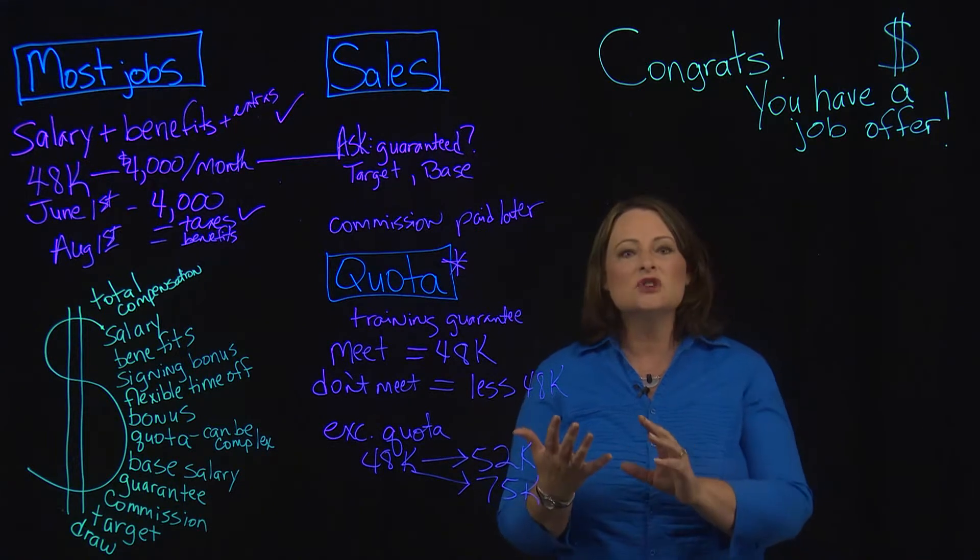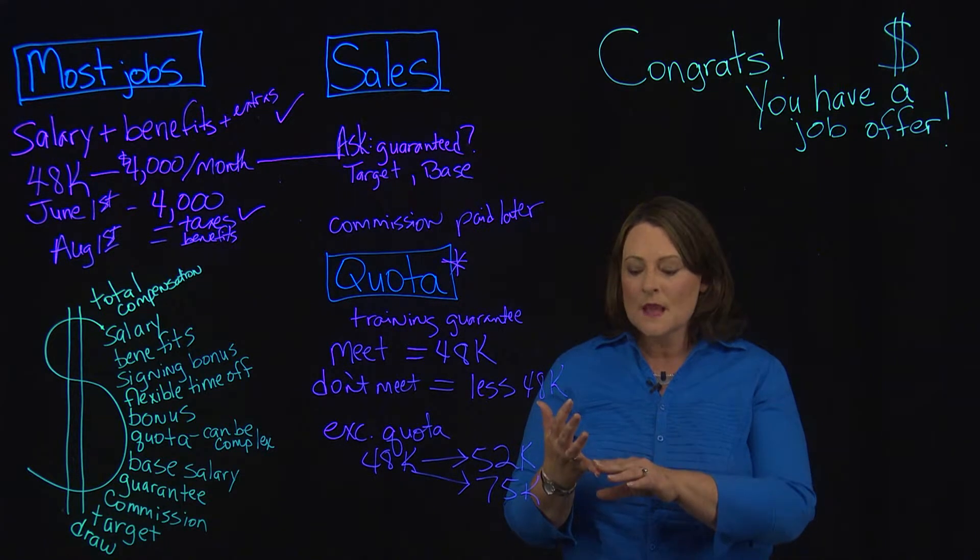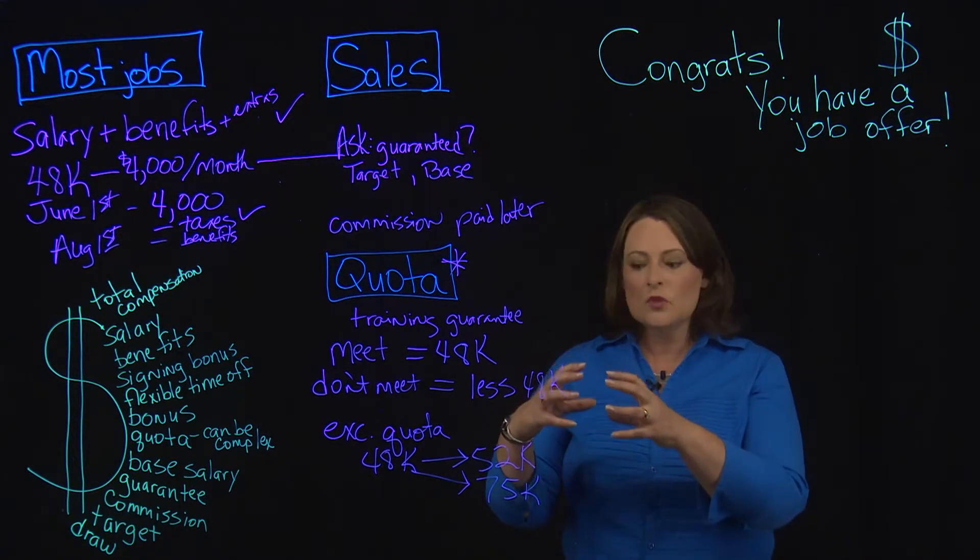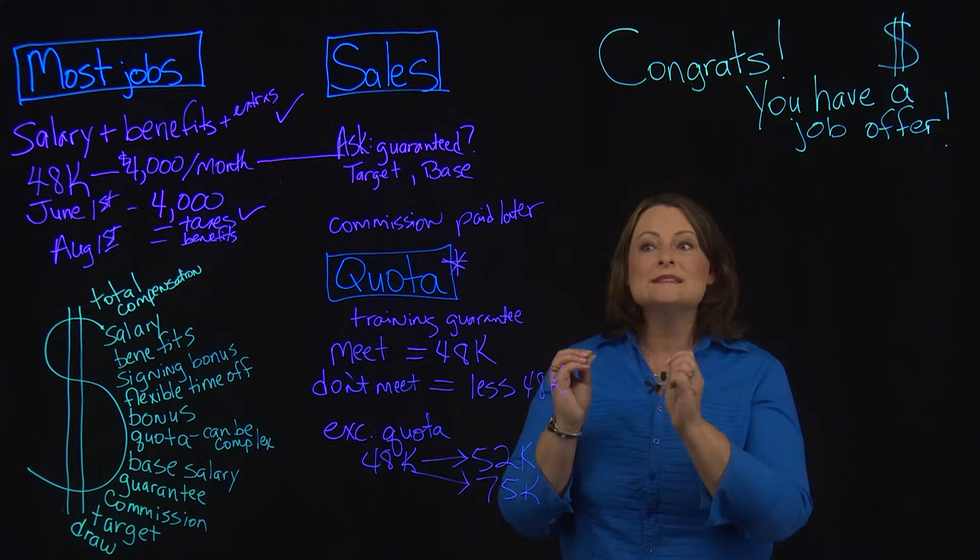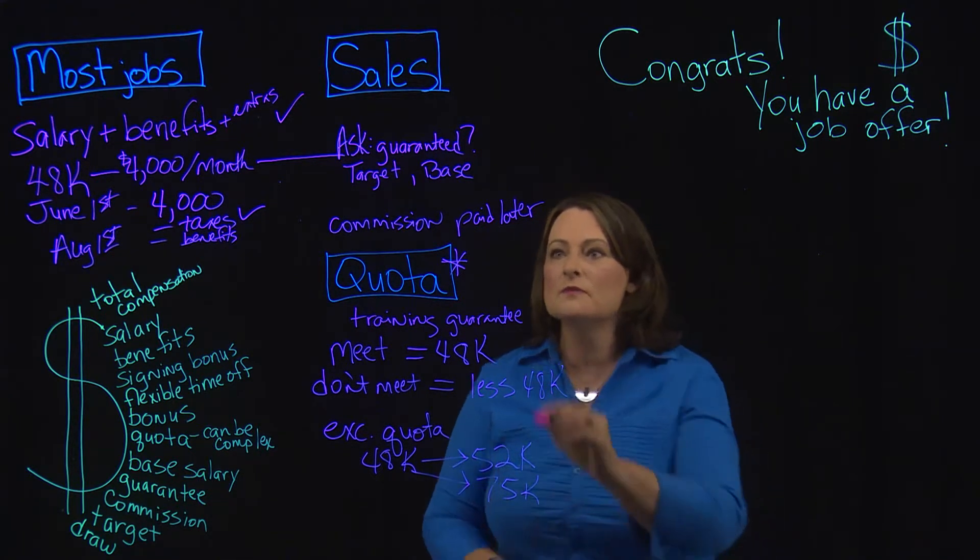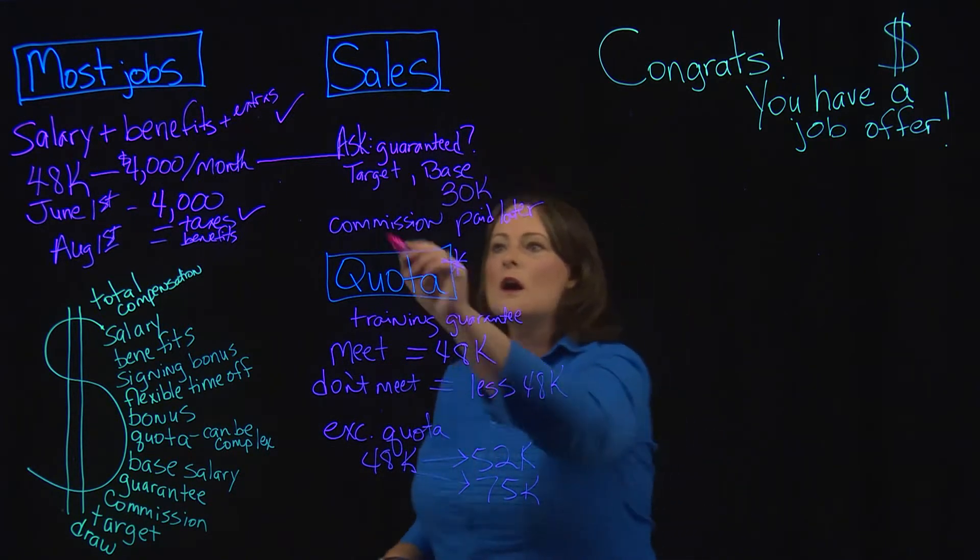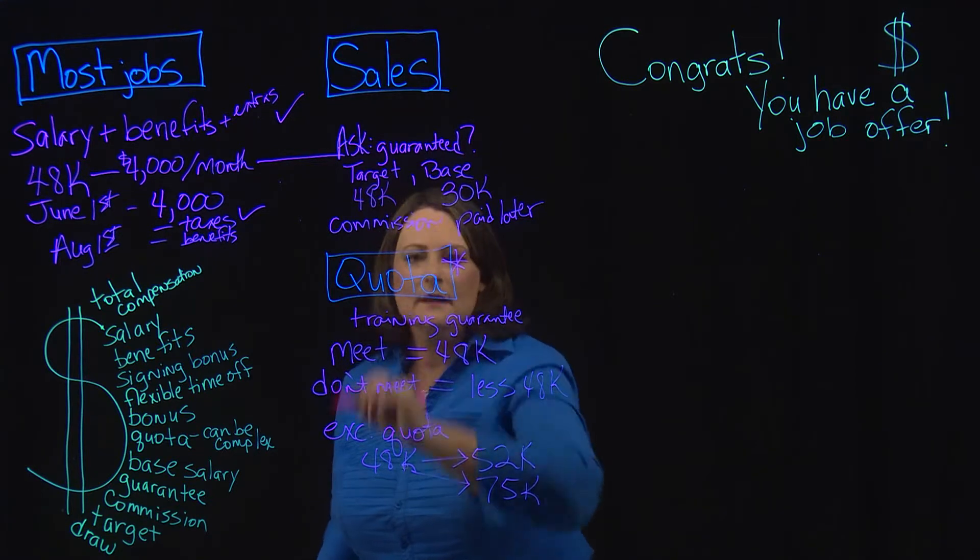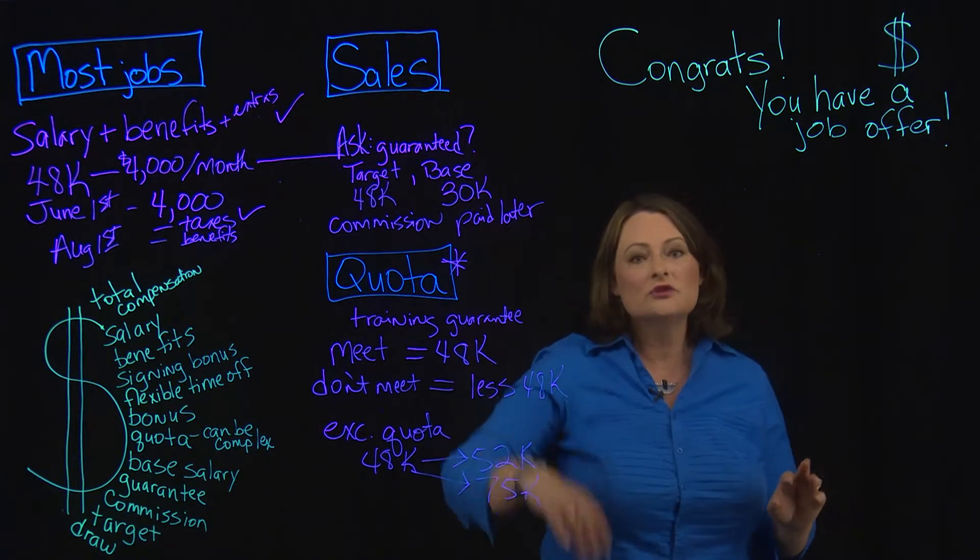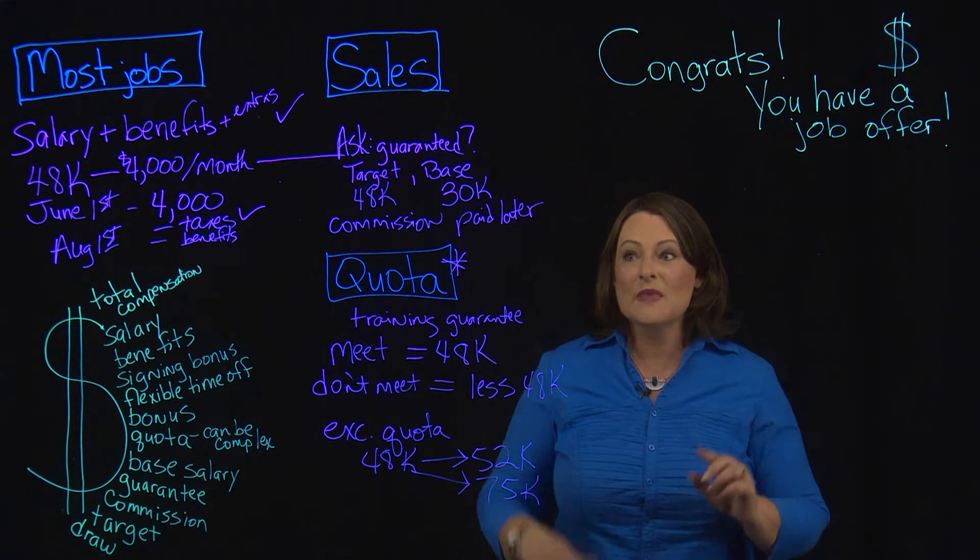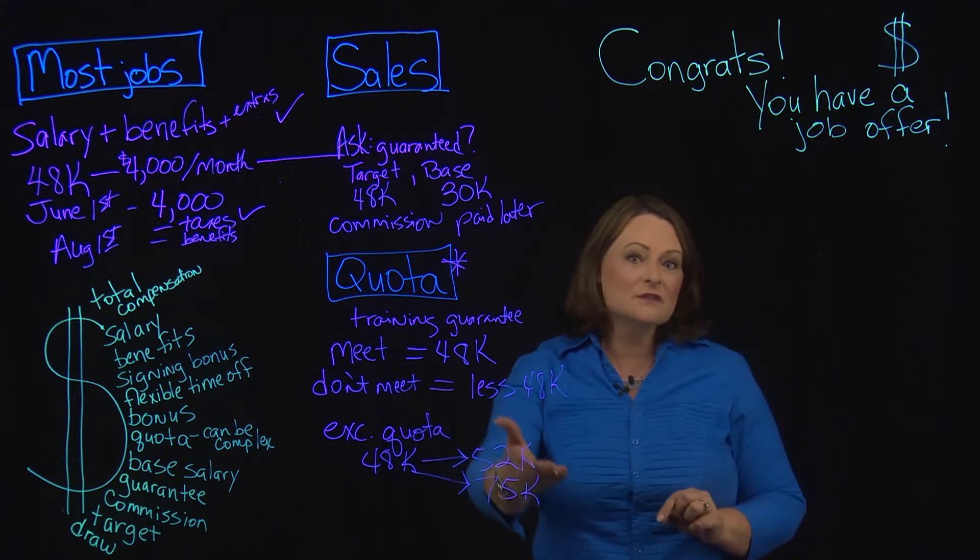Let's continue down here. Let's talk about base. I threw that out. A lot of companies will talk about a base salary as being what is either, what is your, what is not necessarily going to be your target if you hit your quota, but it's what's guaranteed. So let me give you an example here with base. What if your base is 30k? Your target is 48k. What that means is that even if you have a terrible month, you're still on track to make 30k a year. But they want you to hit your target, which is that 48k. And like we said, if you go over, you can make even more money.